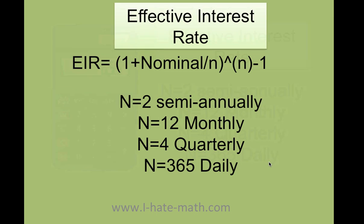So, this is the formula. It is going to be 1 plus the nominal rate divided by n, which is the period. You're going to elevate it to the periods, and then you do minus 1.